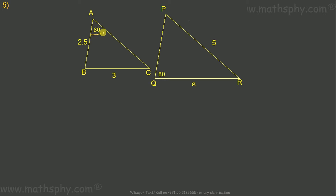For the fifth pair: we have one equal angle in each triangle. To apply the SAS theorem, the sides including that angle must be proportional. Angle A includes sides AB and AC — AC is not known. Angle Q includes sides QR and QP — QP is not known. So it cannot be shown that these triangles are similar.